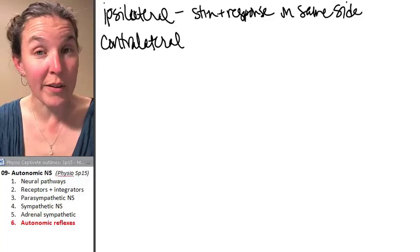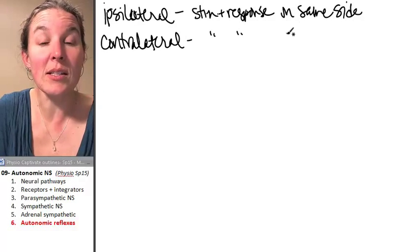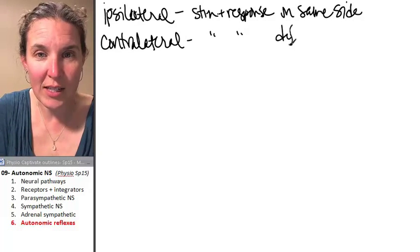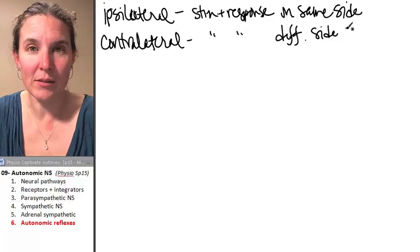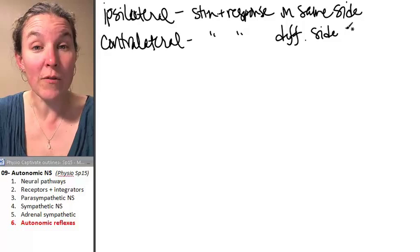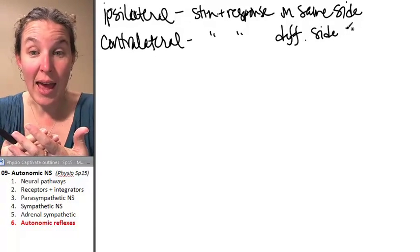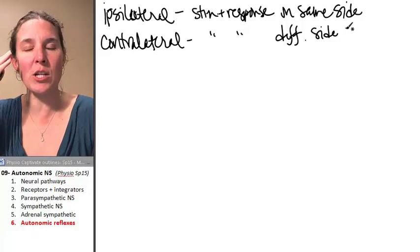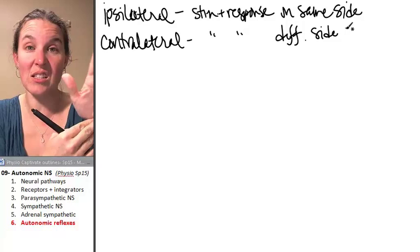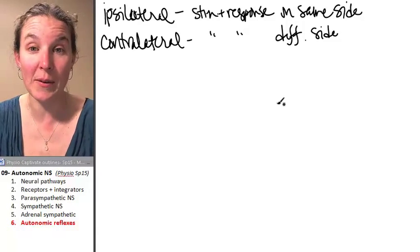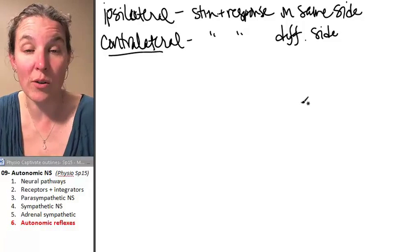A contralateral reflex response is when the stimulus and the response are on different sides. In fact, there's a lot of crisscrossing in the brain. Very often, information from one side of your brain controls things that happen on the other side of your body. So that would be an example of a contralateral pathway or a contralateral reflex.